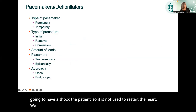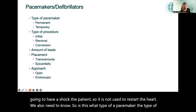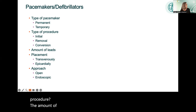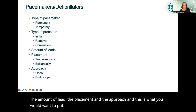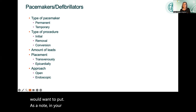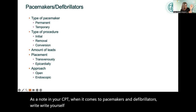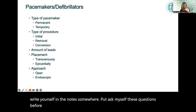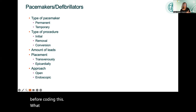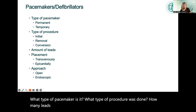To code pacemakers and defibrillators, ask yourself: What type of pacemaker is it? What type of procedure was done? How many leads? How was it placed? And what was the approach used? Write yourself a note in your CPT book reminding you to ask these questions before coding pacemakers and defibrillators.